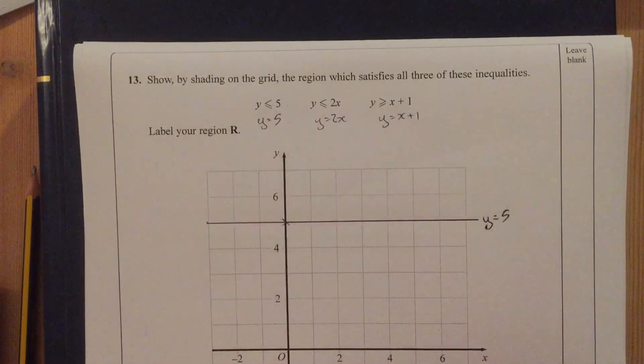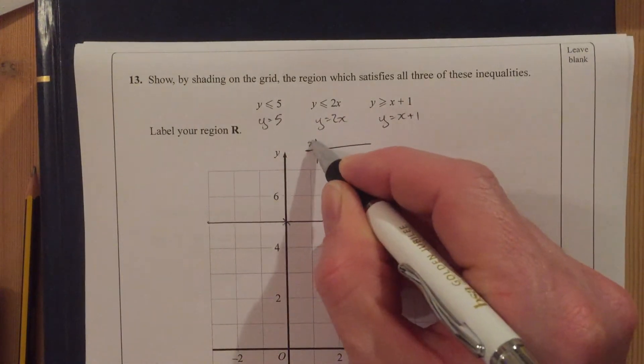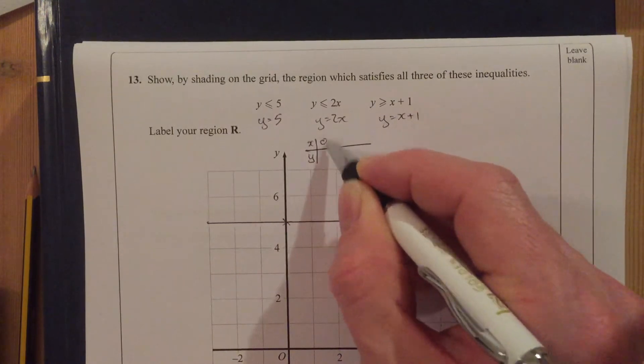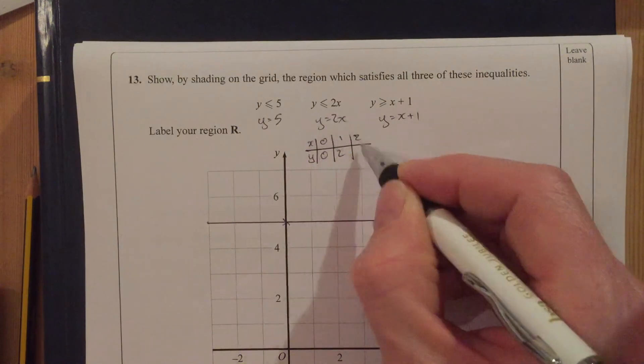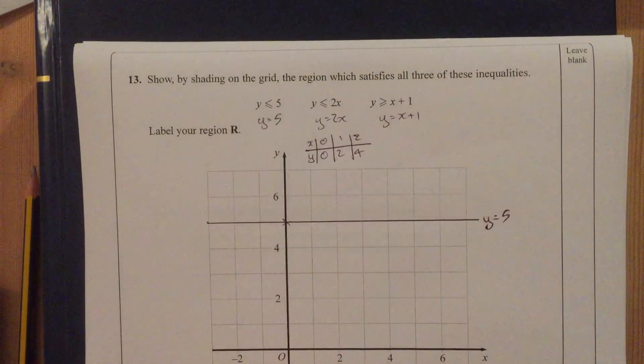Now, y equals 2x. Well, I'm going to set up a little table just very quickly. x and y. When x is 0, y is 0. When x is 1, y is 2. When x is 2, y is 4. y is 2 times x.